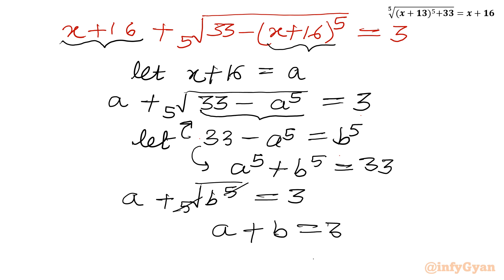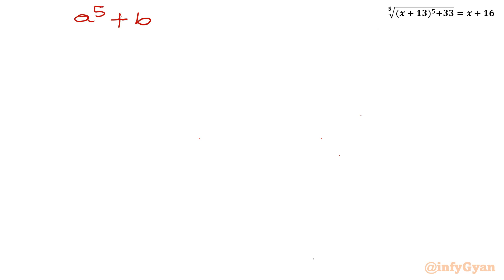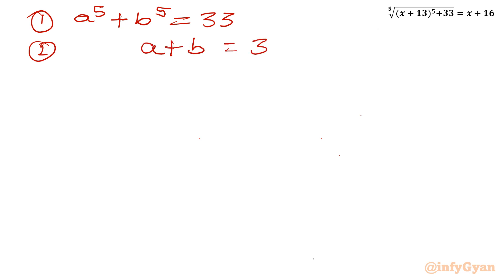We now have a simple system of two equations: equation 1 is a^5 + b^5 = 33, and equation 2 is a + b = 3. Let us solve this system.